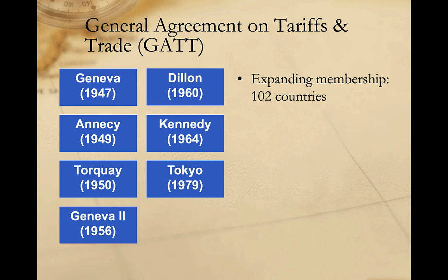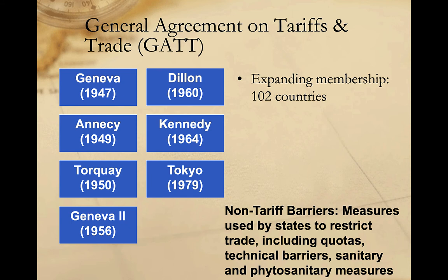The Tokyo Round concluded in 1979. It saw a dramatic increase in the number of countries participating in the GATT, from 48 in the Kennedy Round to 102 in the Tokyo Round. In addition to continuing to reduce tariffs, the Tokyo Round, for the first time in the history of GATT, dealt not just with tariffs but with non-tariff barriers to trade. Non-tariff barriers are any measure used by states to restrict imports — these may be quotas, which are numerical limits on imports; sanitary or phytosanitary measures intended to protect public health and safety; technical barriers; or even intentional delays in customs, or a whole host of other measures. The Tokyo Round took the first steps in establishing common understandings and policy frameworks to address non-tariff barriers among GATT signatories.